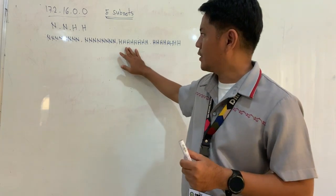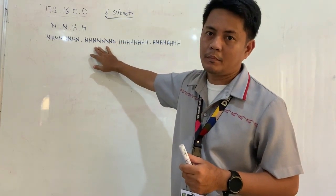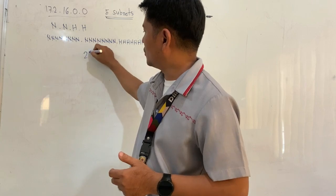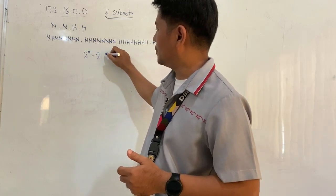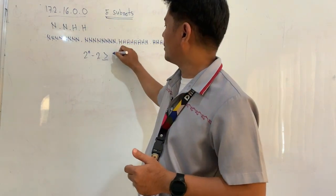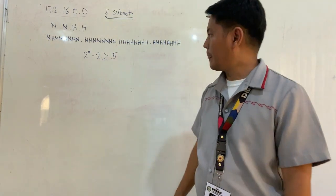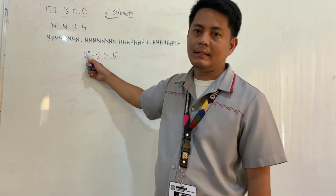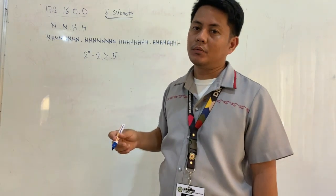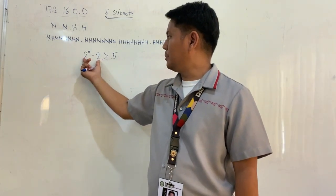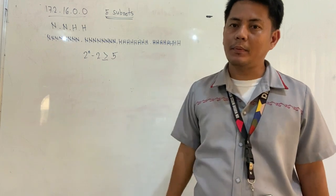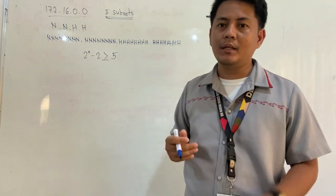The question is: how many bits are we going to borrow from the host to become part of the network? We use the formula: 2 raised to n minus 2, greater than or equal to the requirement of five subnets. Here, n is the number of bits to be borrowed, and the result should be the nearest number greater than or equal to five.